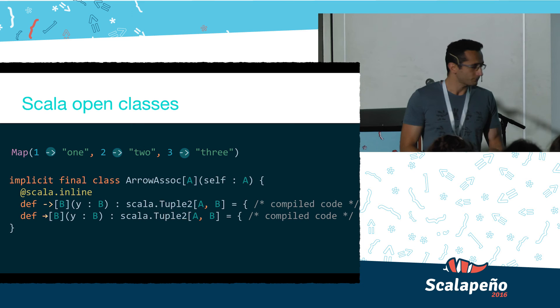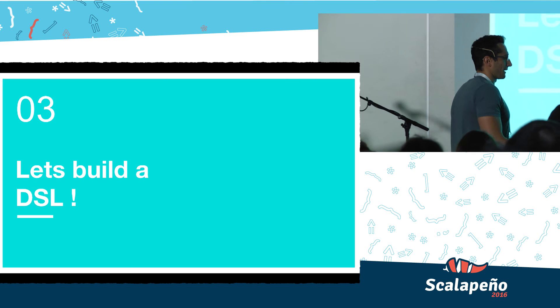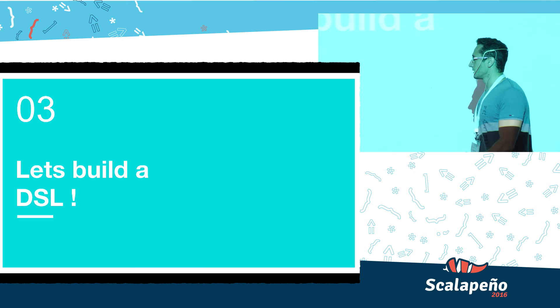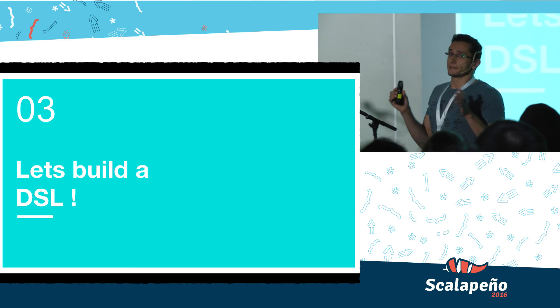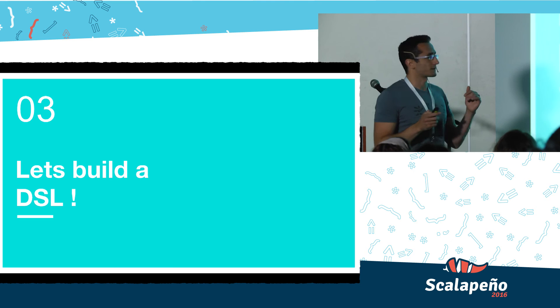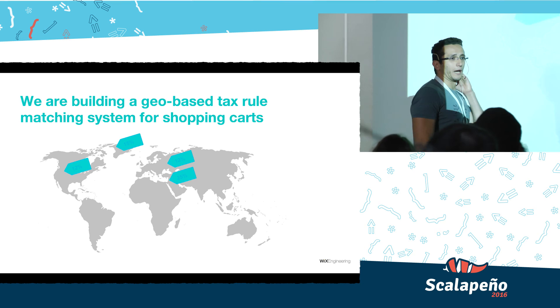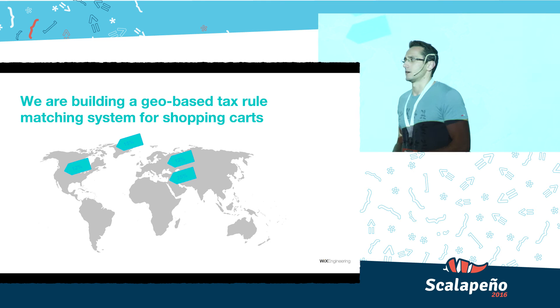So up until now, we saw what DSLs are and what tools Scala gives us to build good DSLs. Let's get dirty and actually build one. We're going to go through a step-by-step example where I explain each conversion. I'm developing Wix Stores, the e-commerce platform, and I've been doing so for about two years now.